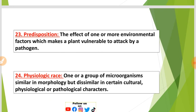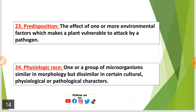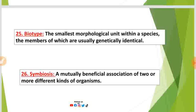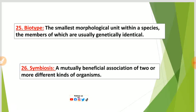Number twenty-four: Physiological race — one or a group of microorganisms similar in morphology but dissimilar in certain cultural, physiological, or pathological characters. Number twenty-five: Biotype — the smallest morphological unit within a species, the members of which are usually genetically identical.